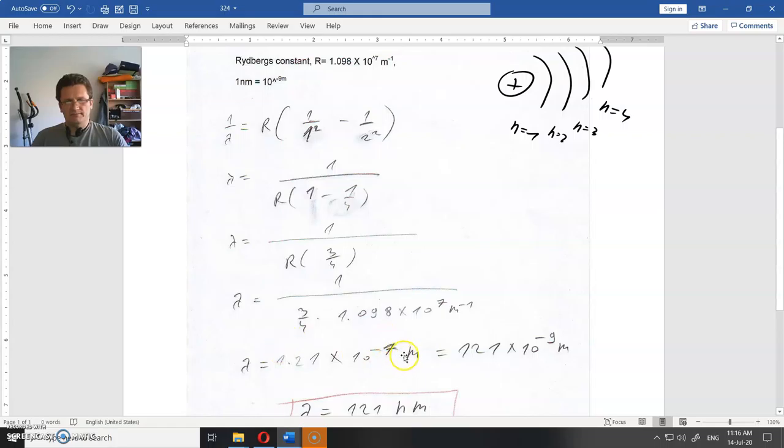So from here to here, meter to the minus 1, when it climbs up it will be meter to the 1, that is just meters. 10 to the minus 10 to the 7—when it climbs up, it will change the sign, so it will be 10 to the minus 7. And from here to here...